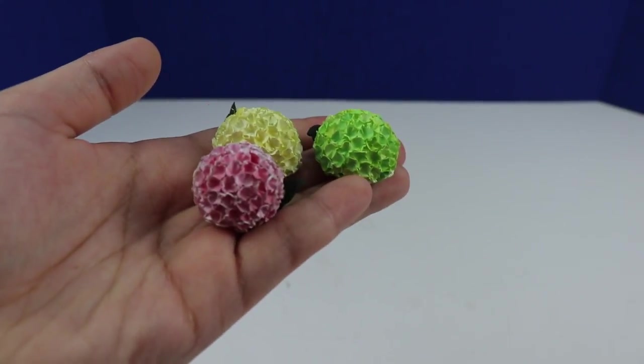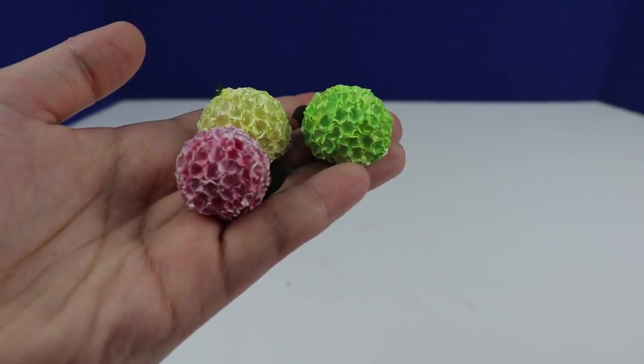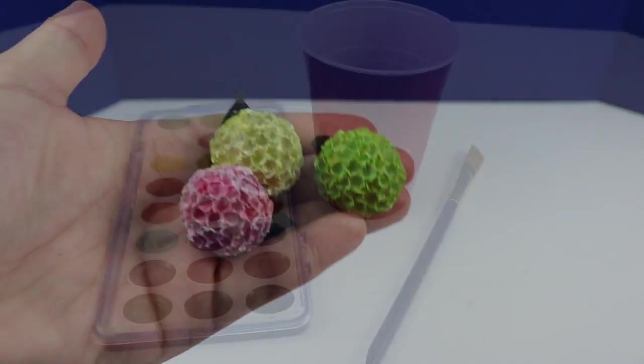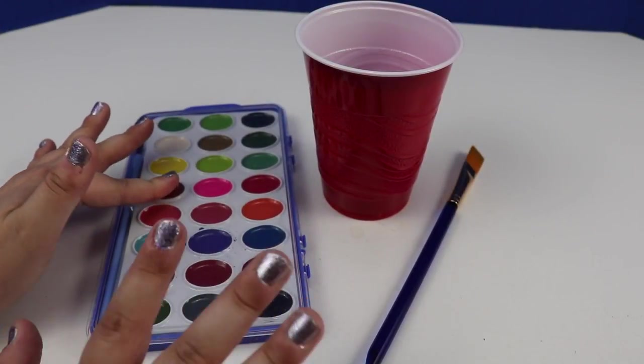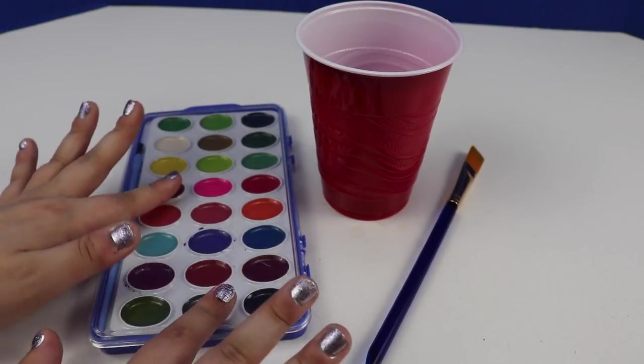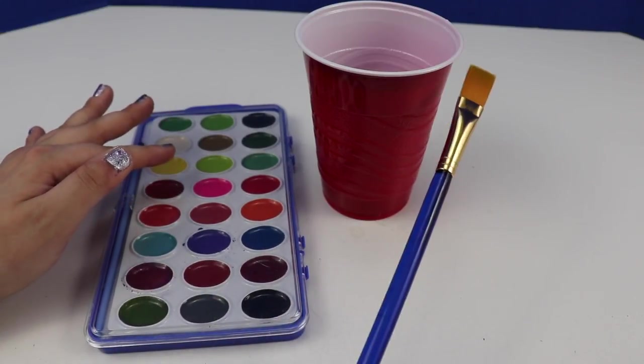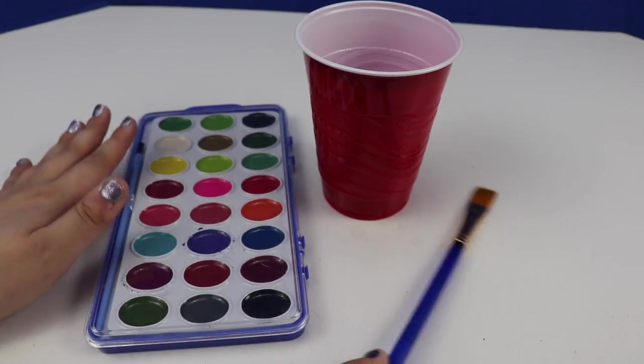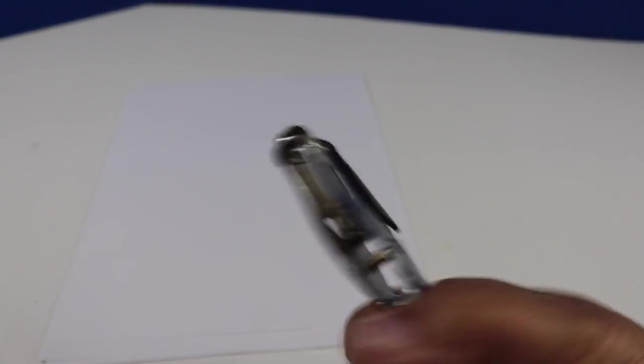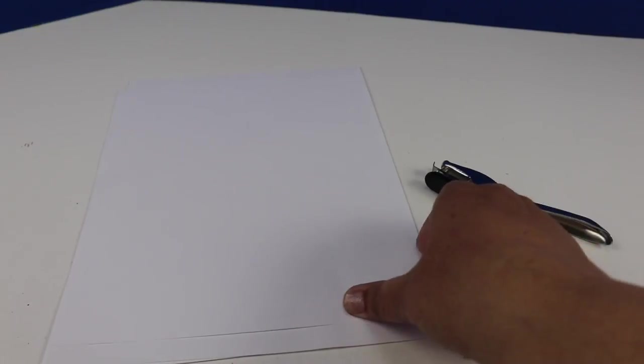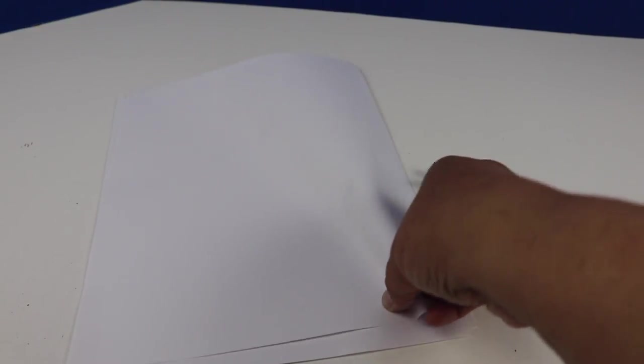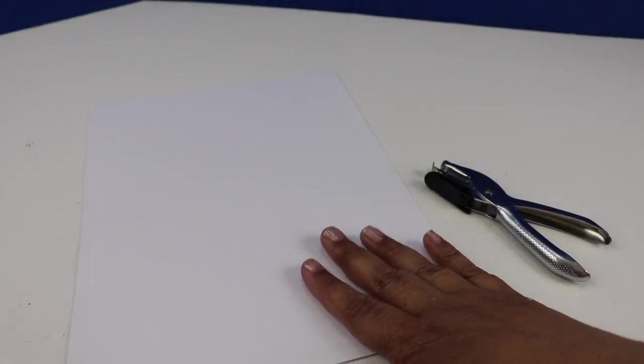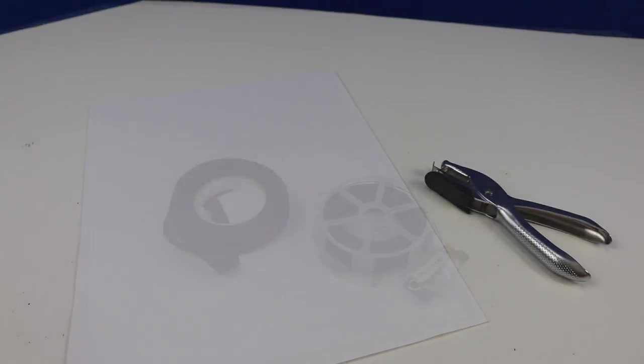We're going to get started and show you the items you're going to need to make these flowers. The first thing you're going to need is watercolors and it doesn't matter what brand you use, just watercolors is fine. You'll need a brush, same goes for that, it doesn't matter what kind of brush, and water. The next thing you'll need is a hole punch, just a single hole punch, and some paper, copy paper. I like to use the thicker, higher weight, but any copy paper will work for this.